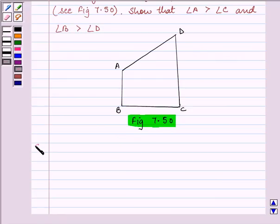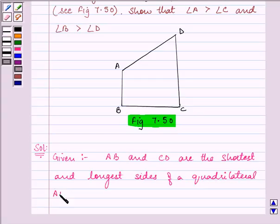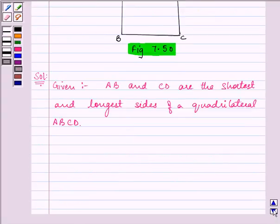Let us start with our solution. It is given to us that AB and CD are the shortest and longest sides of a quadrilateral. We need to prove that angle A is greater than angle C and angle B is greater than angle D.